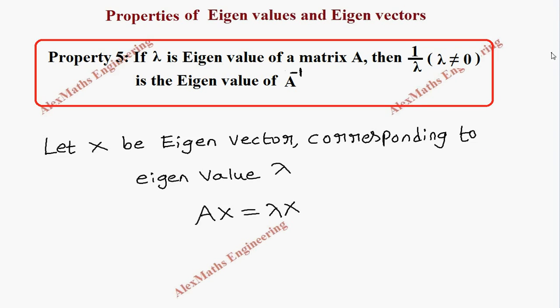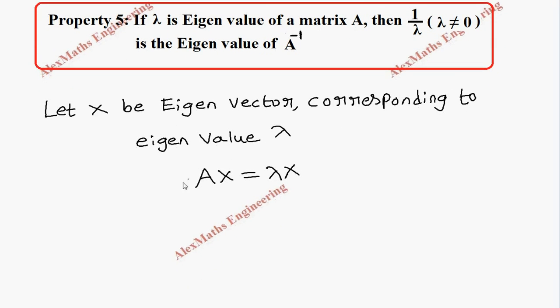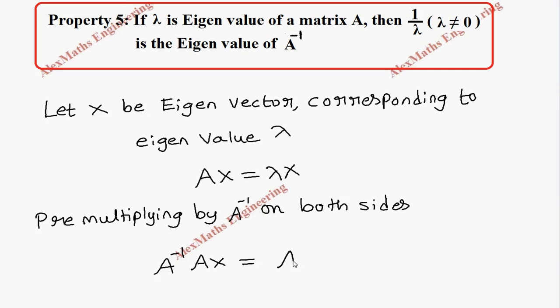Now we are going to pre-multiply by A inverse on both sides. This will be A inverse into AX equal to A inverse into lambda X.